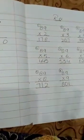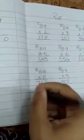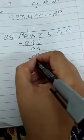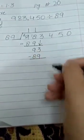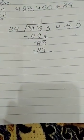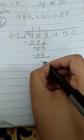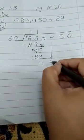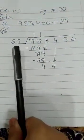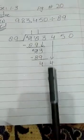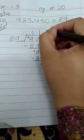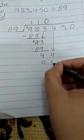Again we check: 89 × 1 = 89. We do the subtraction: 3 minus 9 is not possible so we borrow — 13 minus 9 = 4. Drop down 4, giving us 44. Now 44 is less than 89 so we cannot divide. 89 × 0 = 0, so we write 0 in the quotient and bring down the next digit, giving us 445.